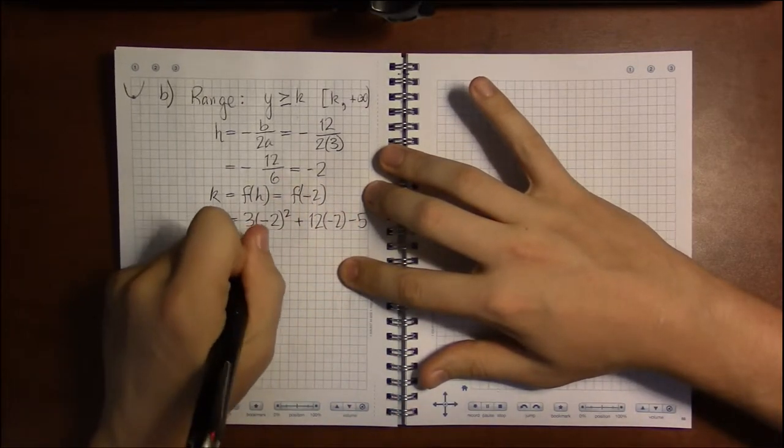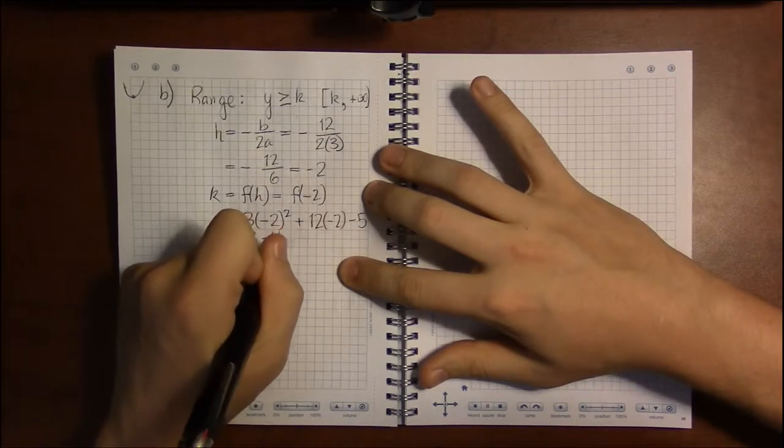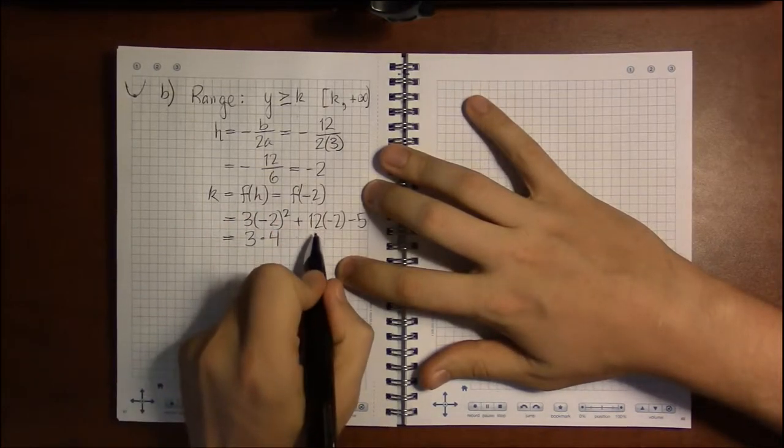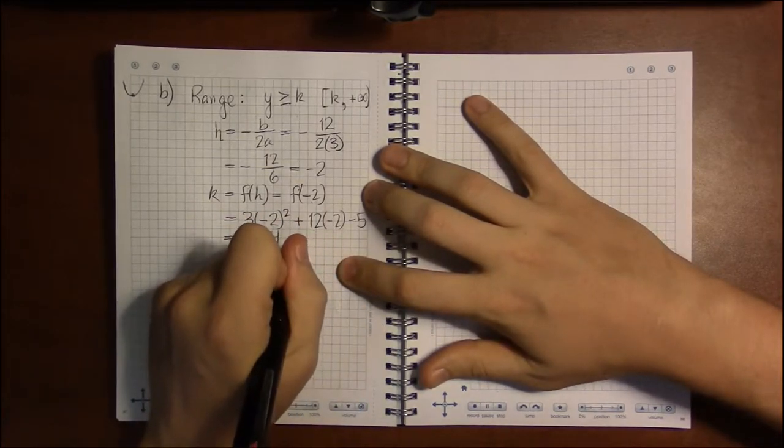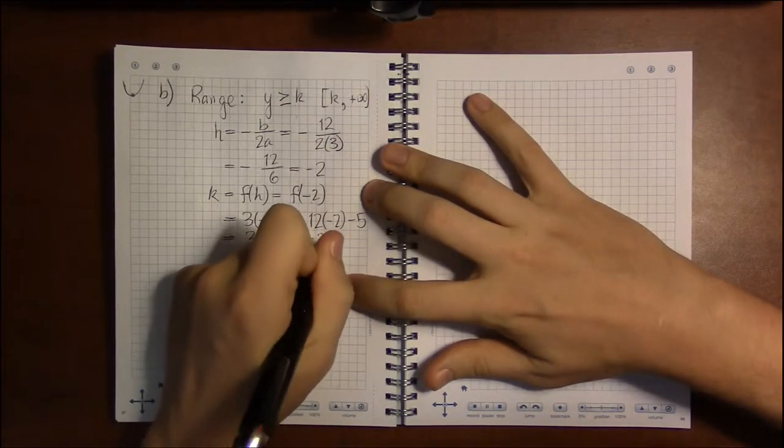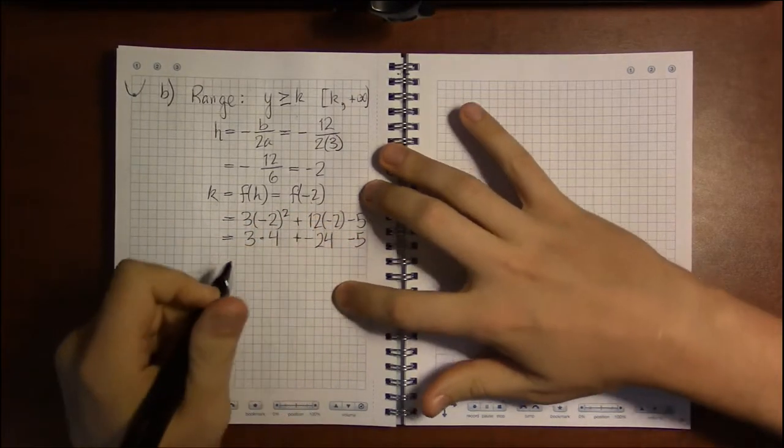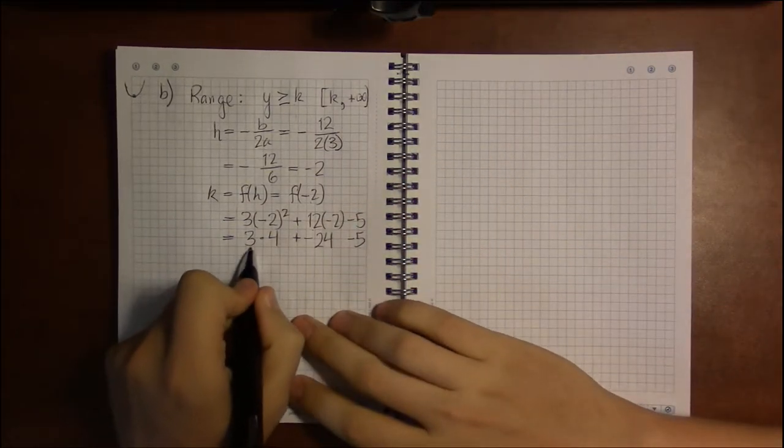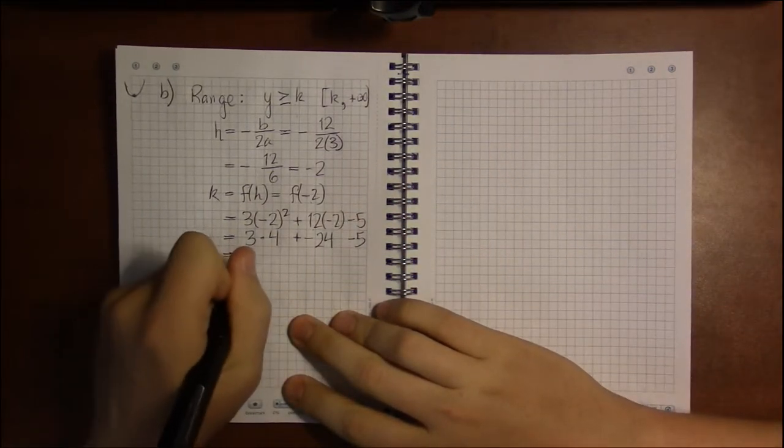So this is 3 times 4, 12 times minus 2 is minus 24, so 3 times 4 is 12.